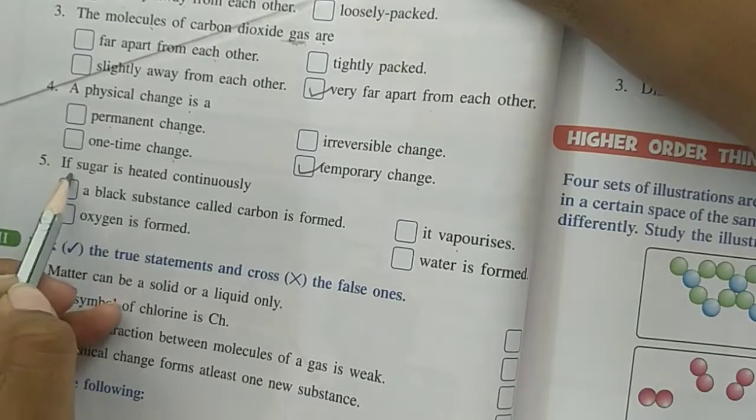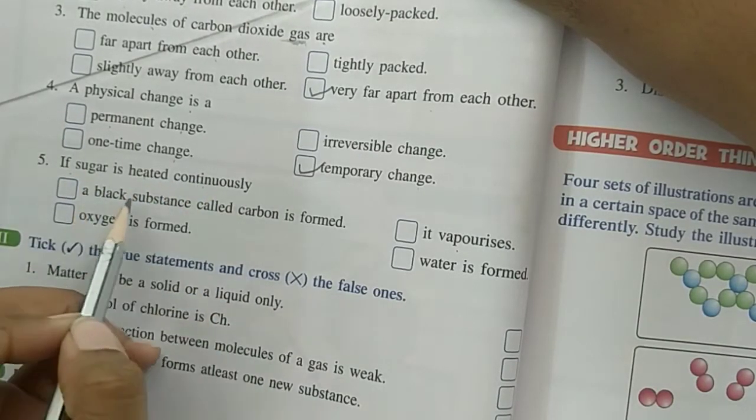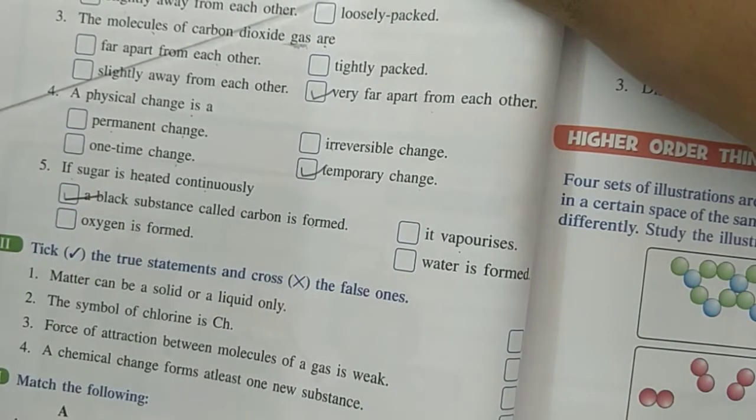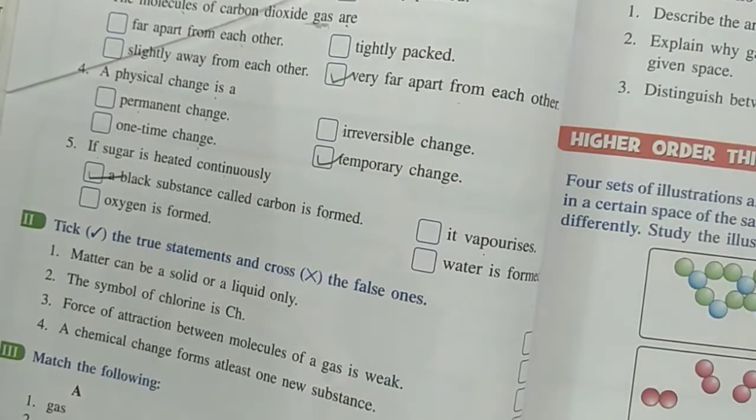If sugar is heated continuously, what happens? A black substance called carbon is formed. So answer is, a black substance called carbon is formed. This is our first question.